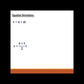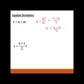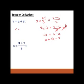The first equation comes from the definition of acceleration as the rate of change of velocity: a = (v − u) / t. Multiplying both sides by t gives at = v − u, then taking u to the right-hand side and making v the subject gives v = u + at. That is our first equation.